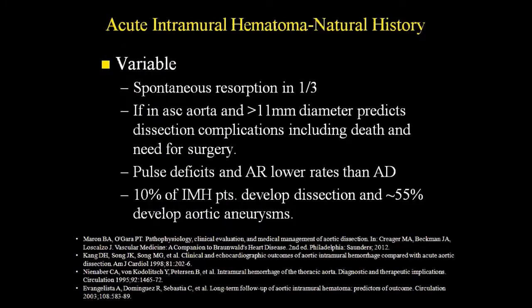Typically you make this diagnosis on CT, MRI, or TEE. Sometimes they are spontaneously resorbed. If you have a very large one — over a centimeter thick in the ascending aorta — you start to treat it more like an aortic dissection, since that person is at higher risk of perforation and death. Talk to surgery about whether they need to go to the OR.